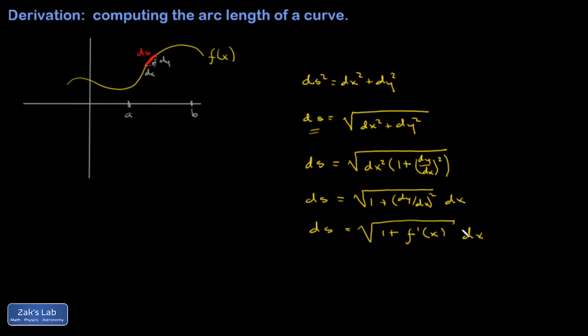So to get the total arc length, I use a capital S for that usually. The total arc length is the sum of all the contributions to the arc length, so the integral of all the ds's, which gives me the integral as x goes from a to b, square root of 1 plus f prime of x squared dx.